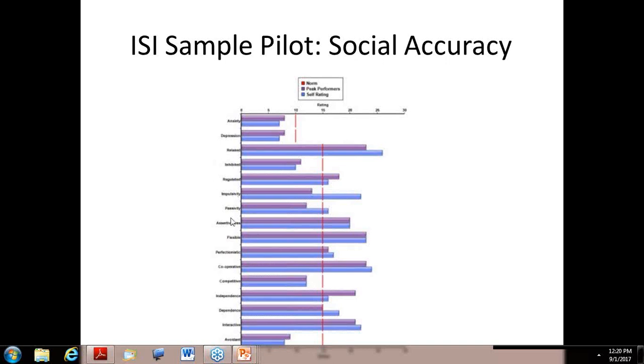And so these come from other authors. All of these dimensions measure social behavior. Now, there are 16 dimensions here, and they are opponent process dimensions. They are complementary, not in the way that you think, but regulated and impulsive are complementary. Passivity and assertiveness are complementary. Relaxed and inhibited are complementary. Flexible and perfectionistic are complementary.